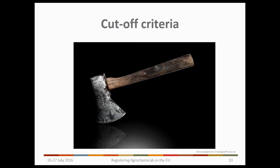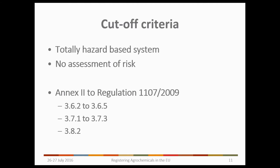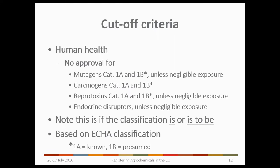Starting with Cut-Off Criteria — this is a new concept and it's a totally hazard-based system. There is no assessment of risk when deciding whether your substance is going to meet the Cut-Off Criteria. The details are found within Annex 2 to Regulation 1107 and are detailed in the points shown on the slide. Looking first at human health: